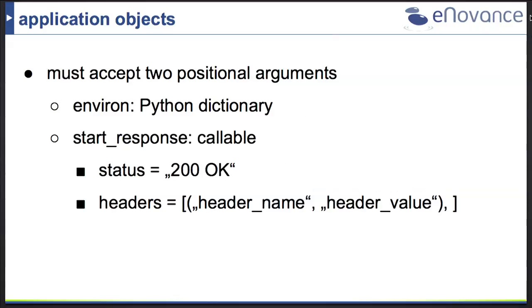Application objects must accept two positional arguments. The first is a Python dictionary called environment, and the second is a callable called start_response. The start_response callable itself takes two arguments: one is the status — for example 200 OK or 404 Not Found — and the second is a list of tuples representing the headers sent back to the client, such as content-type text/plain.